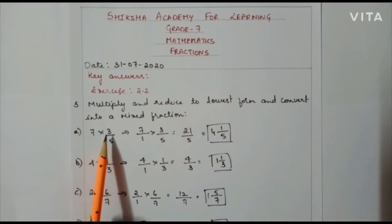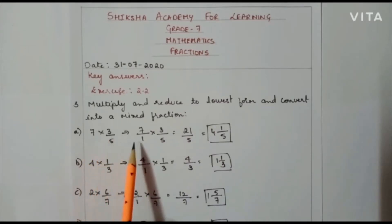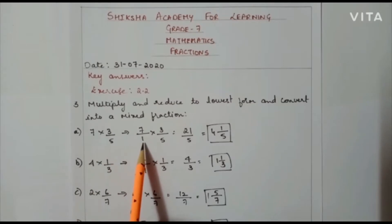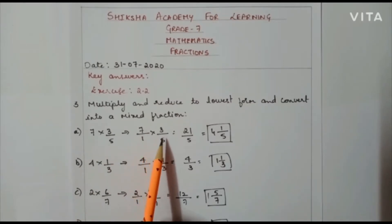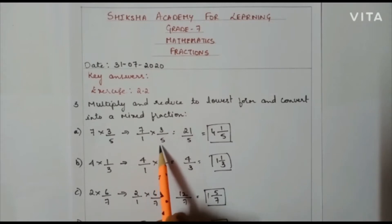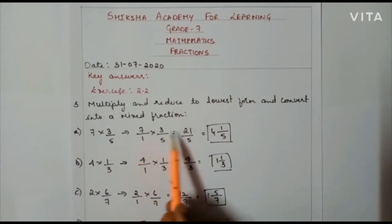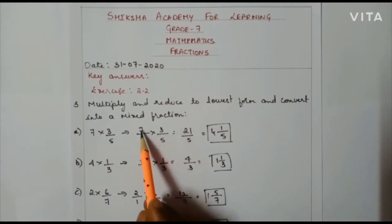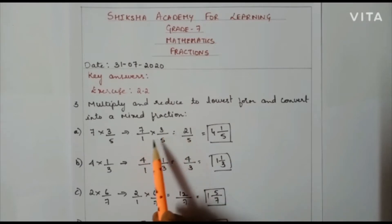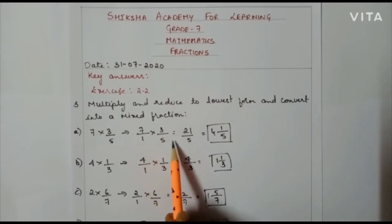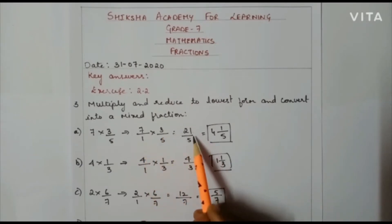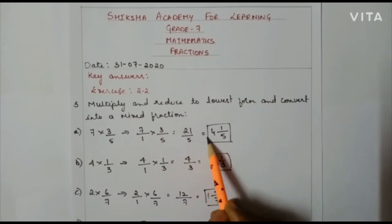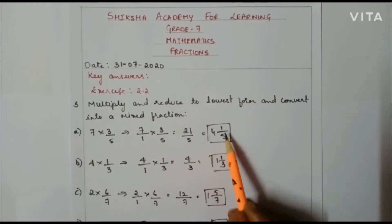First one: 7 × 3/5. We convert 7 to a fraction: 7/1 × 3/5. I check whether I can cancel — I can't cancel here. So 7 × 3 = 21, and 1 × 5 = 5. Numerator into numerator is 21, denominator into denominator is 5. So 21/5 is the answer. Converting to a mixed fraction gives 4 and 1/5.